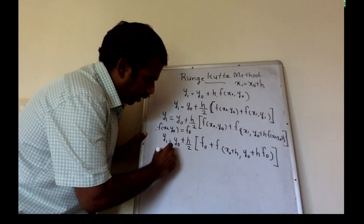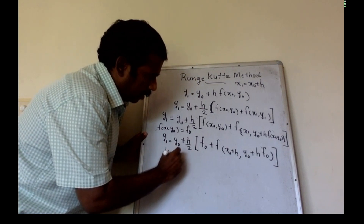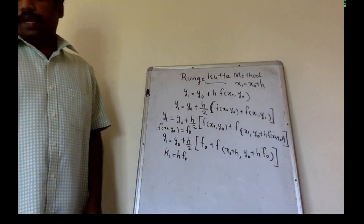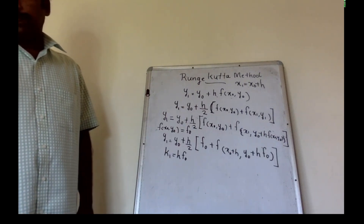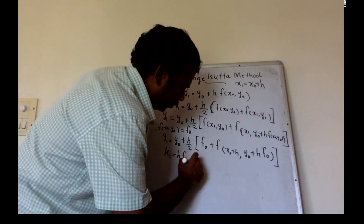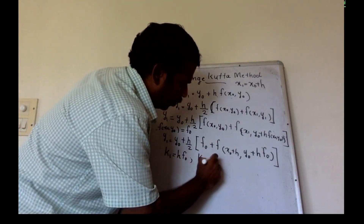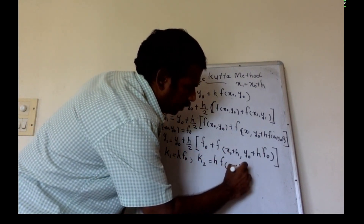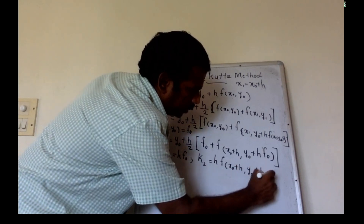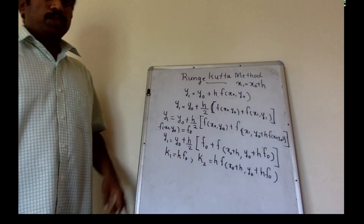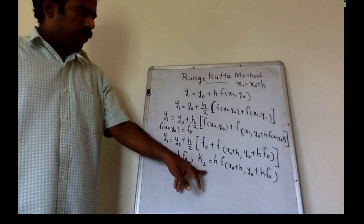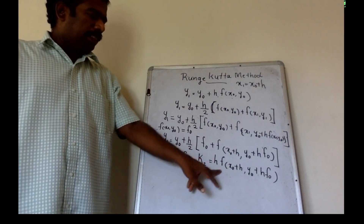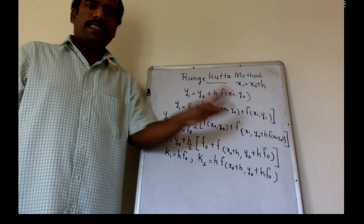Substituting, we let k1 equal to h·f0, and k2 as the second variable. So y1 is expressed in terms of k1 and k2.